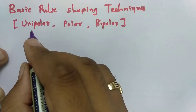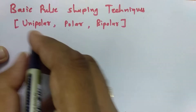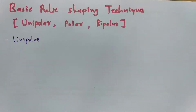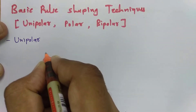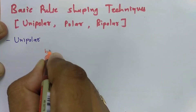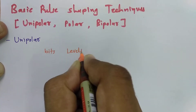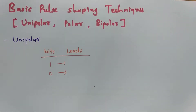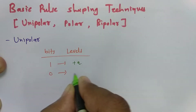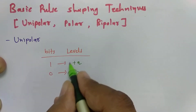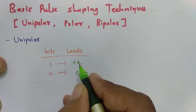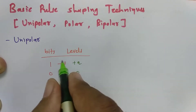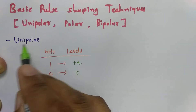Let us begin with the first technique: unipolar. In unipolar pulse shaping, we assign voltage levels with respect to bits. When you have bits 1 and 0, bit 1 is assigned a voltage of plus A — which could be +1V, +2V, +5V, or +20V — and bit 0 is assigned 0 voltage. That is how voltage assignment works in the unipolar technique.